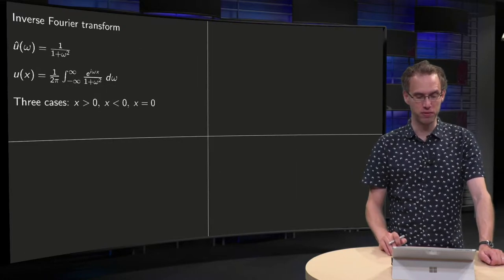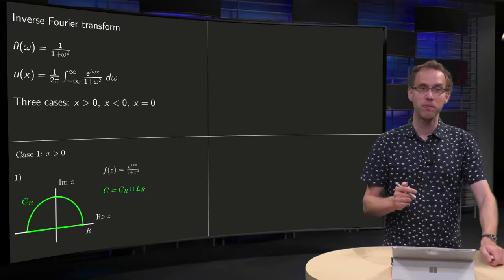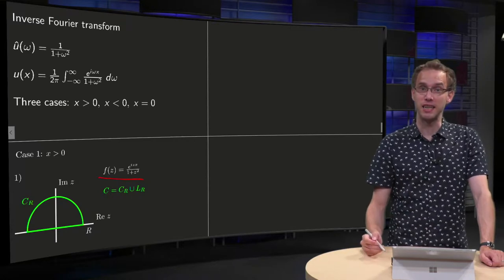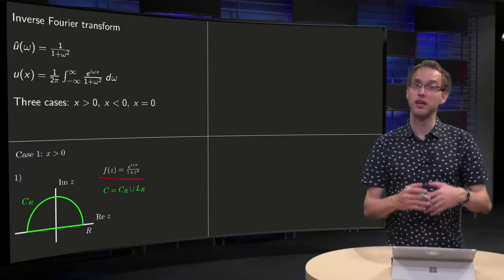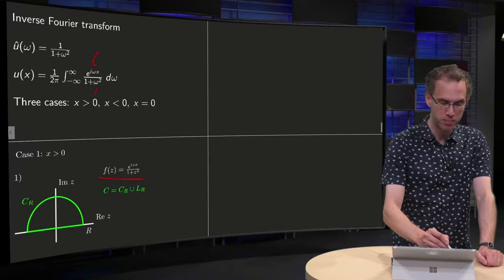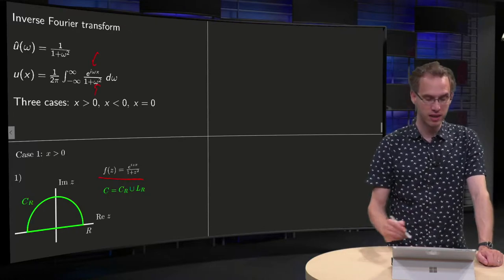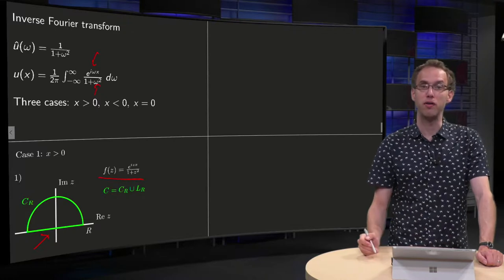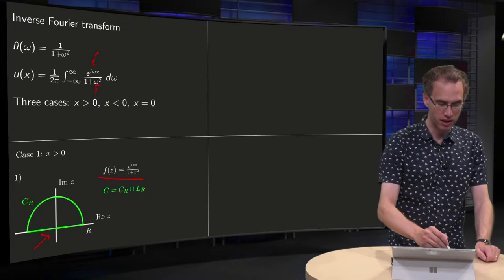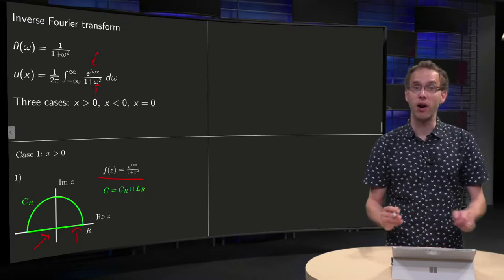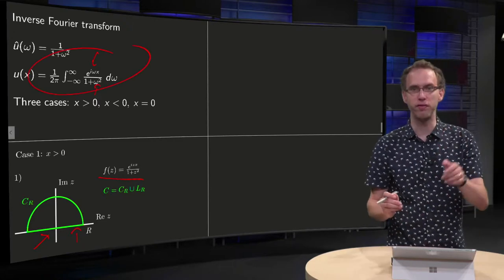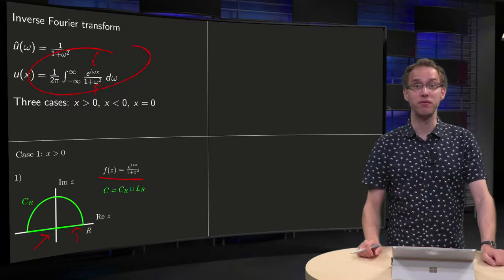Let's start with x positive. We use the complex function f(z) = e^{izx} / (1 + z²). Remember, we want to integrate with respect to ω later on, so we replace the ω's by z's. I use the contour shown here. If we parameterize L_R with z = ω, we get the desired integral back — up to a factor of 2π, but we will fix that factor later on.